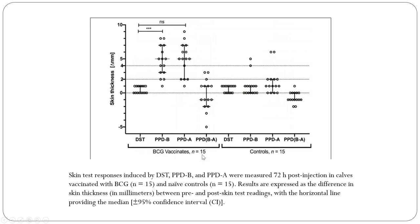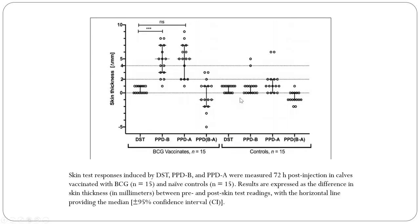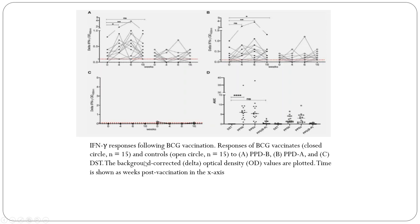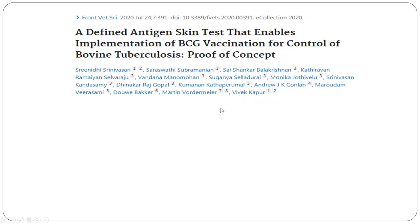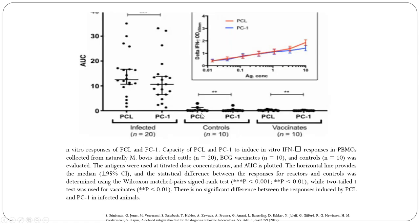PPDB was used in the DST. The defined antigen didn't detect anything in the controls, and in vaccinated animals it really didn't detect anything either. So another area was created — a skin test with a chimeric antigen, not simple DST. Two areas were chosen: PPDA and PPDB combined. The chimeric antigen area was known as PCL and PC1 — one was long-chain chimeric, the other short-chain chimeric. The short-chain chimeric worked much better.